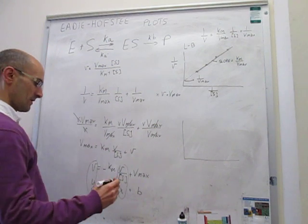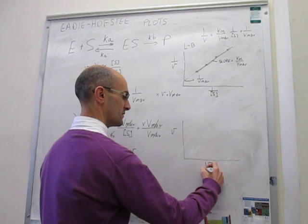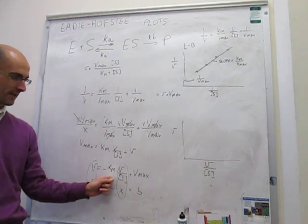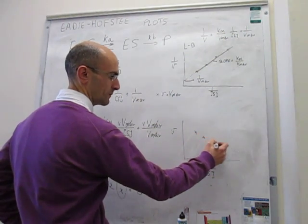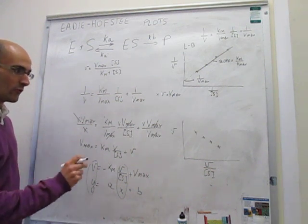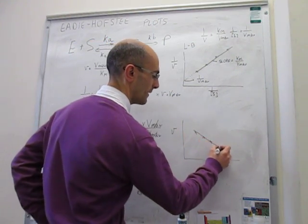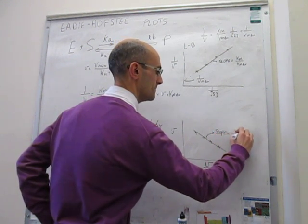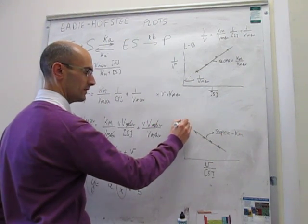On the Eadie-Hofstee plot, the Y-axis is the rate V and the X-axis is V/[S]. This gives a straight line with a negative slope equal to -Km. If you plot four experimental points and the enzyme follows Michaelis-Menten kinetics, those points should be well fit by a straight line whose slope is -Km and whose Y-intercept is Vmax.